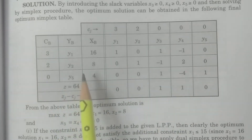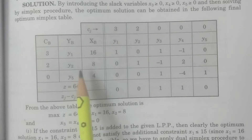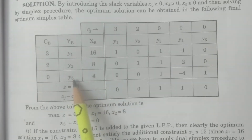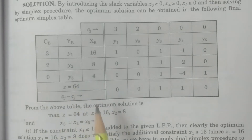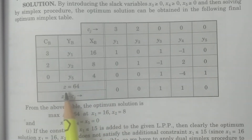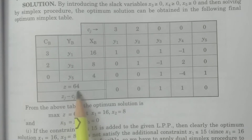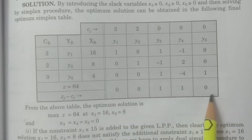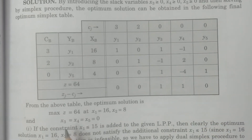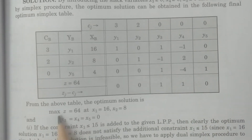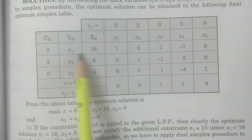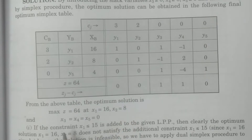You see here, y1, y2, and y5 — these three vectors are in the basis, and the maximum value of z = 64. All the net evaluations are greater than or equal to 0. The solution is: maximize z = 64, x1 = 16, x2 = 8, and x3, x4, x5 = 0.